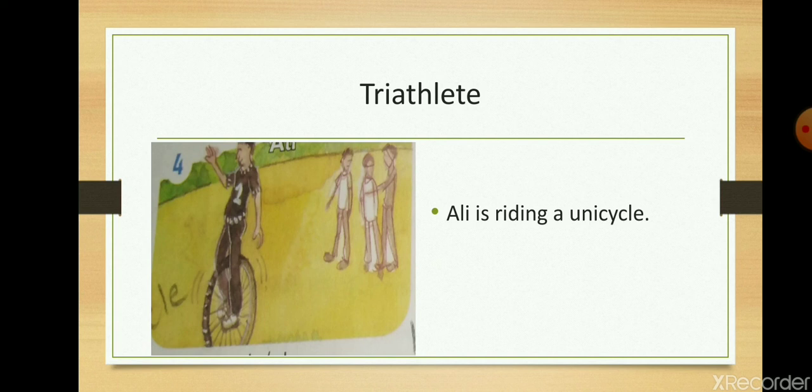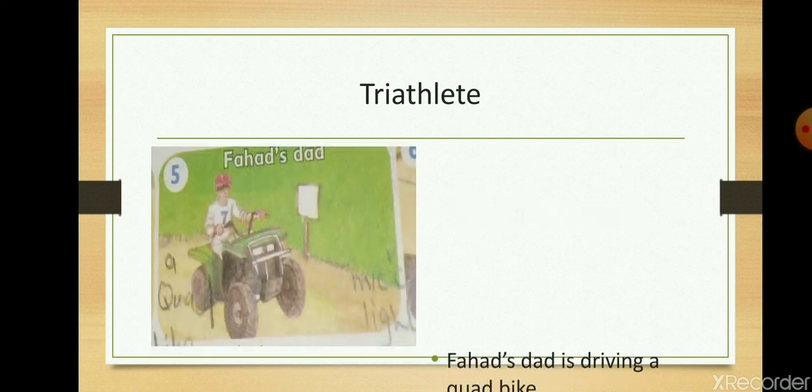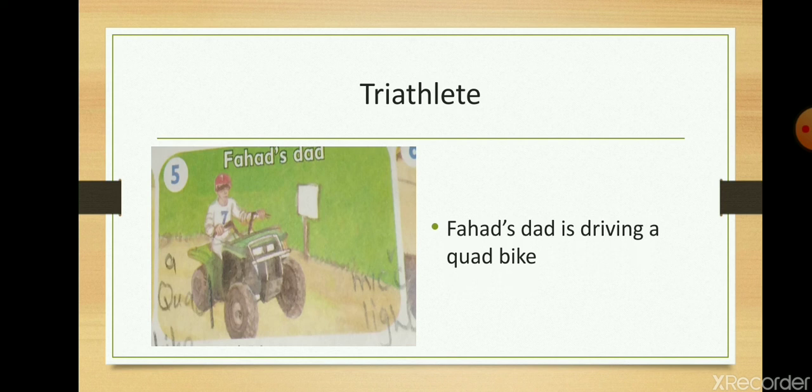Ali is riding a unicycle. Unicycle is running a bike. Fahad's dad is driving a quad bike.